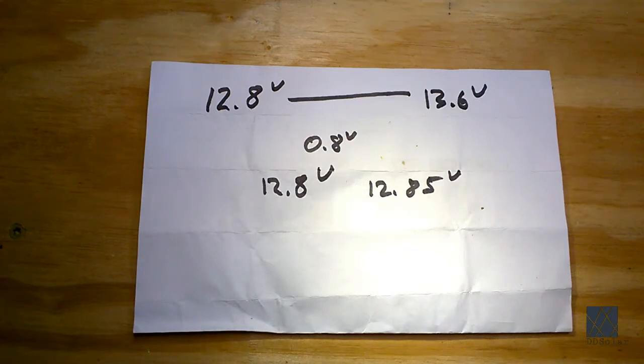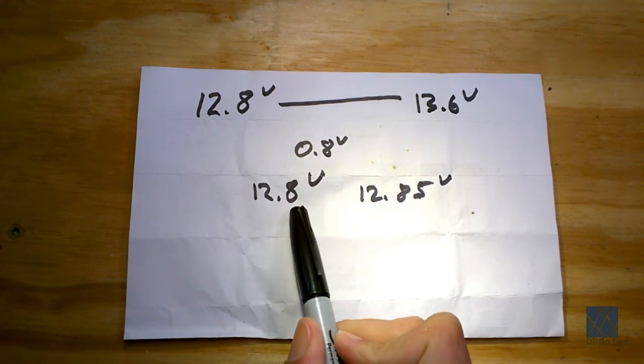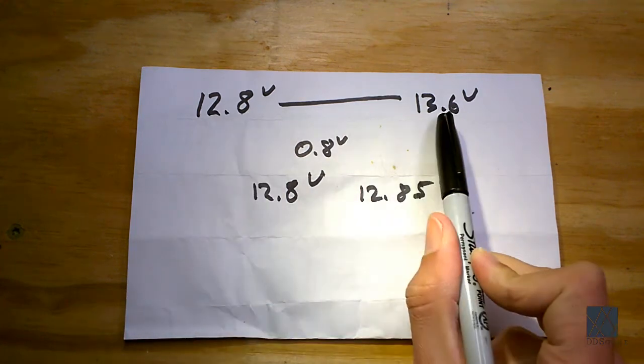Ideally the voltmeter would have more digits to display the voltage with and the reason is very simple. A voltmeter that displays the voltage with one digit after the decimal place isn't going to show you very much change going from 12.8 volts to 13.6 volts. It'll hardly move at all.